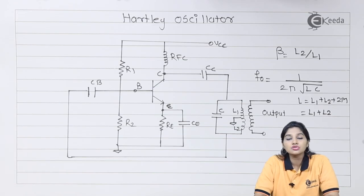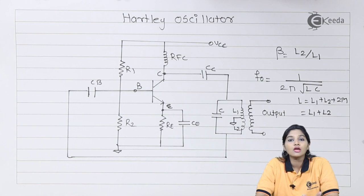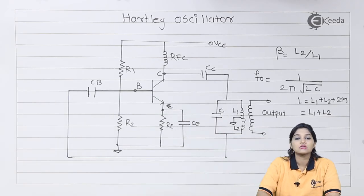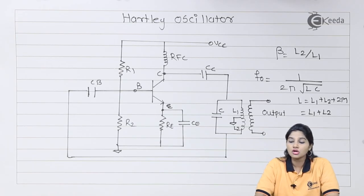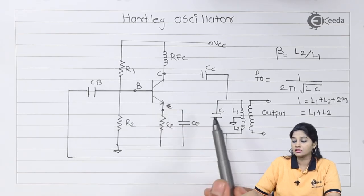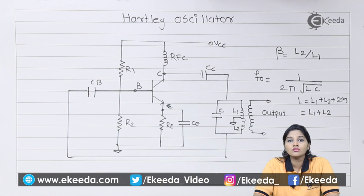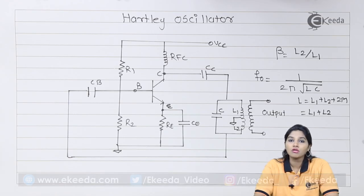As the transistor is used as an amplifier, every component has its own application and function. The capacitor CC is called coupling capacitor and is used to couple output from the collector to the tank circuit. Whenever the collector current flows or voltage is applied across collector, it allows only AC component to pass through the circuit and blocks DC component.